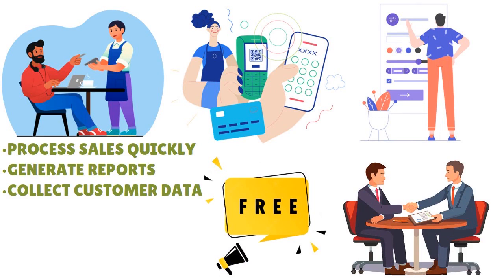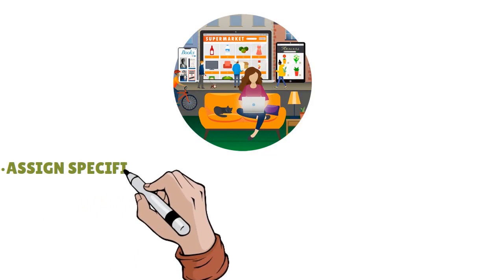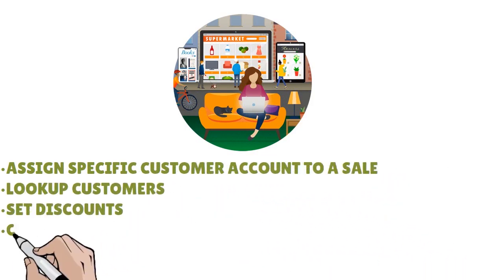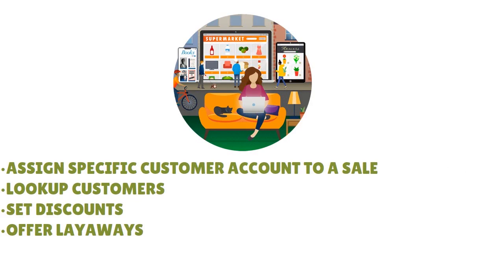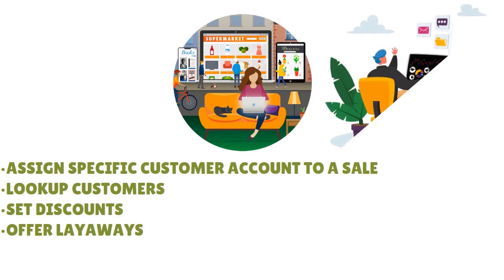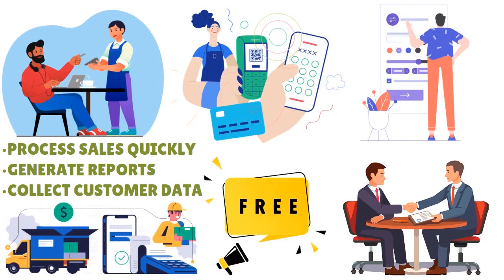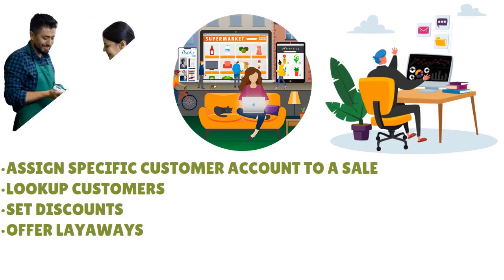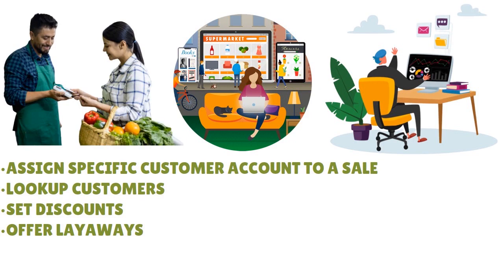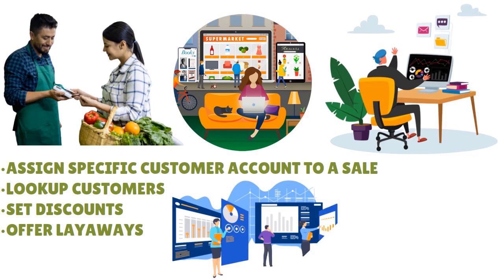You can set various access levels based on users, whether managers or bartenders. If you own a retail business, you can assign a specific customer account to a sale, look up customers, set discounts, and offer layaways. The possibilities are really endless. You can use the supplier module to manage accounts, request orders, check credit limits, and keep track of deliveries — including pulling up previous orders to monitor past sales. Unicentor POS also offers offline transaction capabilities and the ability to customize specific data fields depending on your niche.